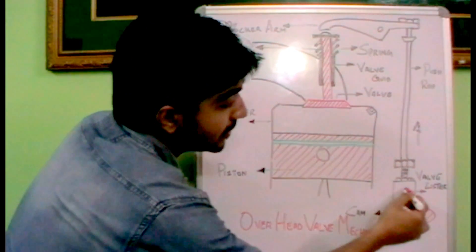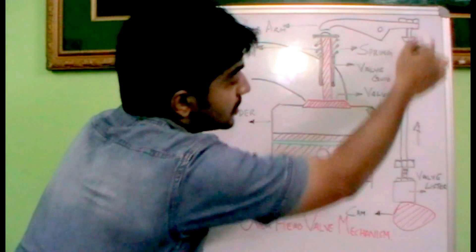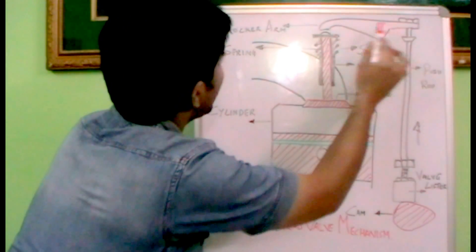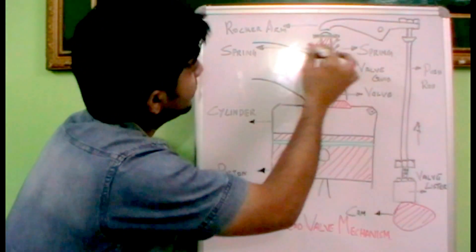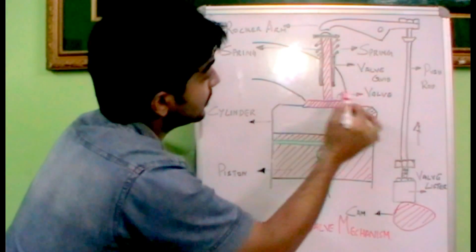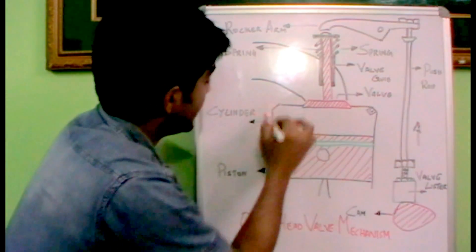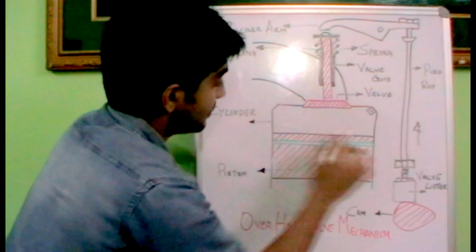This is the cam over here. This is the valve lifter. This is the push rod. And here we have the rocker arm over here. This is the spring. This is the valve guide. This is the valve which is marked in the rear. This is the cylinder. This is the piston.